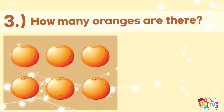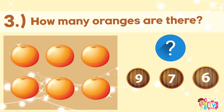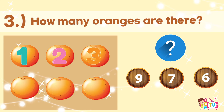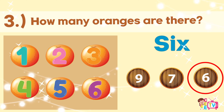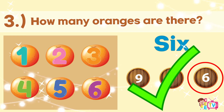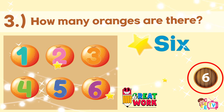Number three. How many oranges are there? One, two, three, four, five, six. There are six oranges. I will circle number six. Amazing! You got it right. There are six oranges.